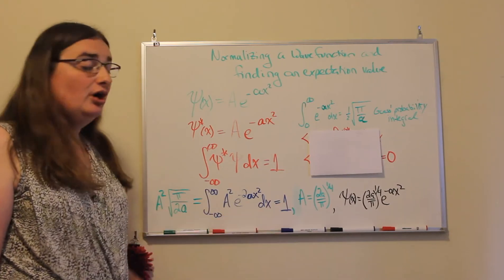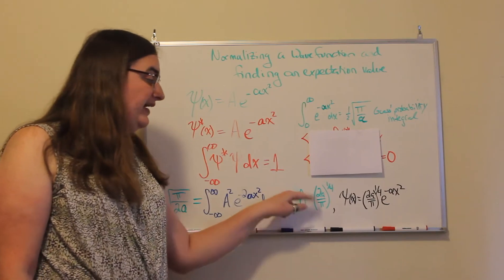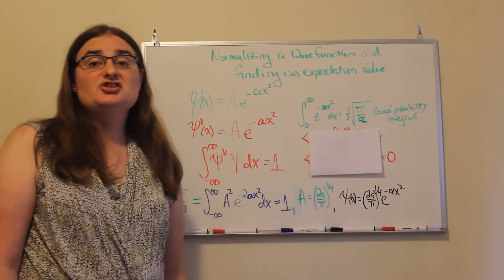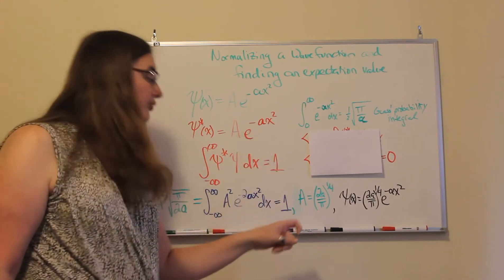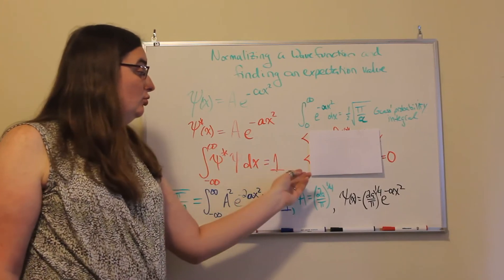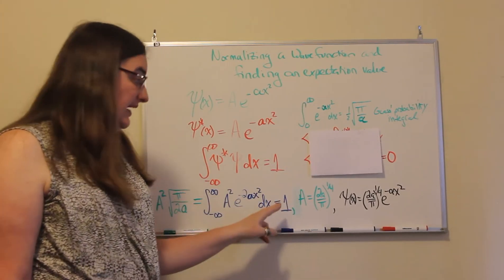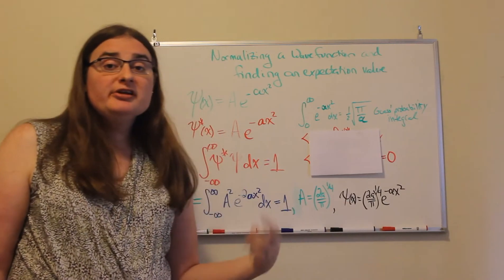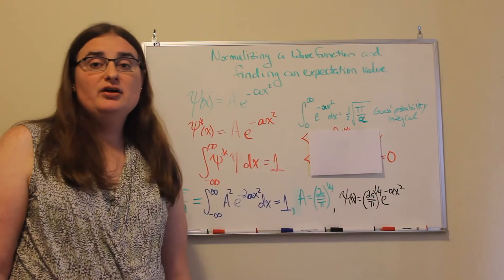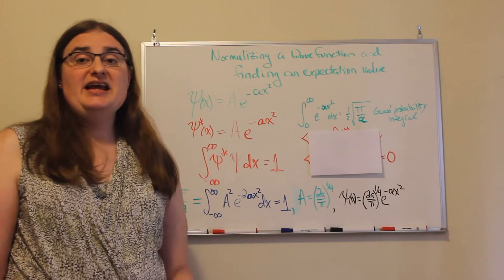So solving for my constant capital A, a would be 2 over pi quantity raised to the one-fourth power, the square root of the square root of 2a over pi. Now, once we have that constant, we would properly write our wave function as being psi of x is 2a over pi to the one-quarter power times e to the minus ax squared.